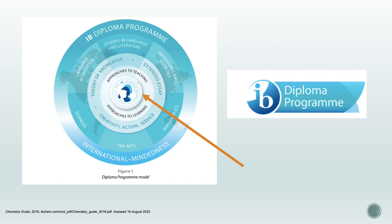Through studying a science subject, students should become aware of how scientists work and communicate with each other. The next concentric circle shows the TOK, extended essay, and the CAS activities. All diploma program students participate in the three courses and the elements that make up the core of the model. Approaches to teaching and learning across the diploma program refers to the deliberate strategies, skills, and attitudes which permeate the teaching and learning environment. These approaches and tools intrinsically link with the learner profile attributes, enhance students' learning, and assist students' preparation for the diploma program assessments.